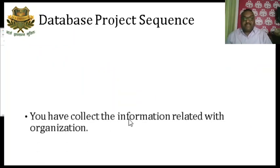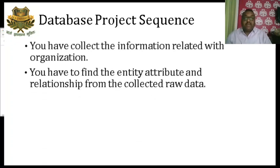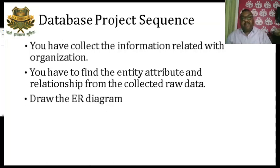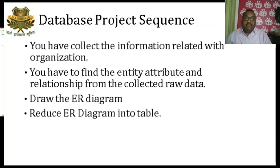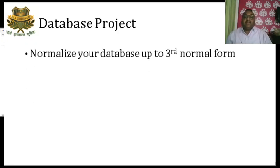These are the project sequences. First, collect information from the organization for whom you are designing the project. Then find the entity attributes and relationships from that raw data. Then draw the ER diagram. Then reduce the ER diagram into tables. Then write queries based on your database and write answers in terms of relational algebra as well as SQL. Then normalize your database up to third normal form.